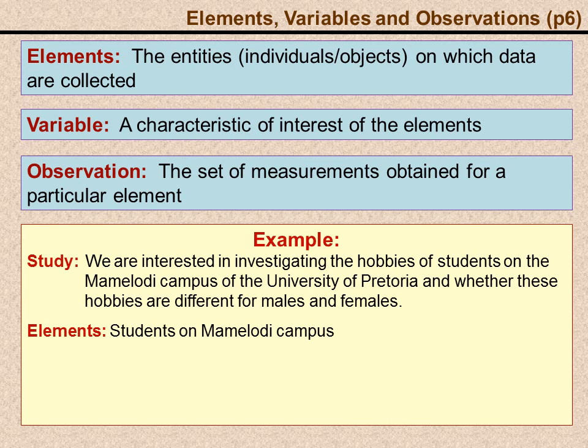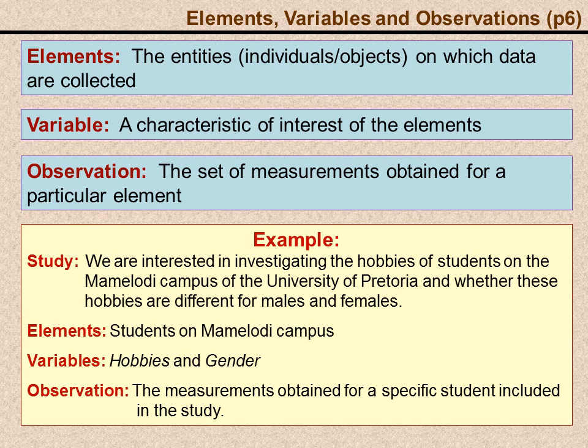The variables we are interested in would be the hobbies that these students practice and their gender. We have two variables here. An observation, by definition, is the set of measurements that we obtain for the elements. Our elements are students on the campus. The observations would be the measurements that we obtained for the specific students that we've included in our study.